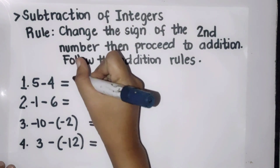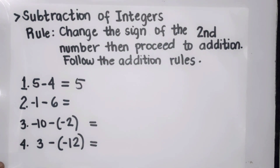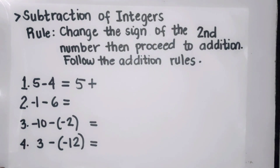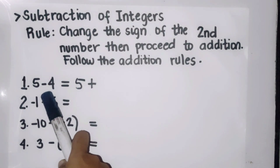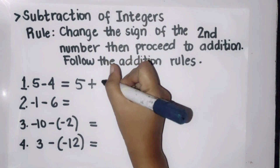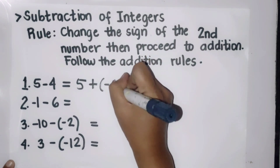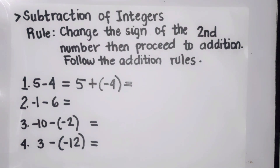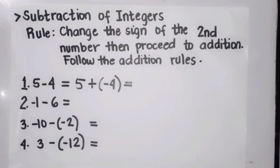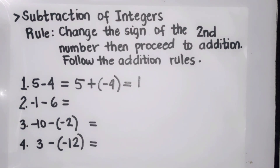Copy the first number, then proceed to addition, and change the sign of the second number. The second number is positive four, so change it to negative four. Now we have five plus negative four. Since they have different signs, subtract: five minus four is one. Since positive five has the larger absolute value, our final answer is also positive one.